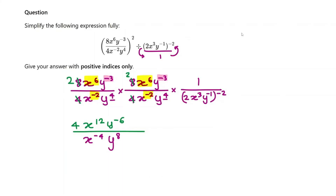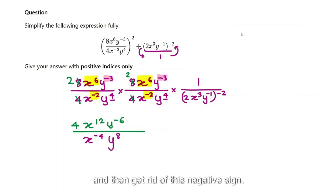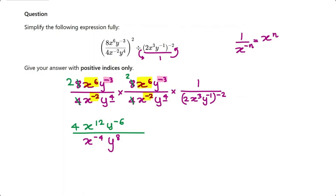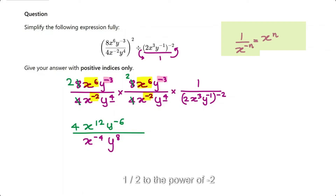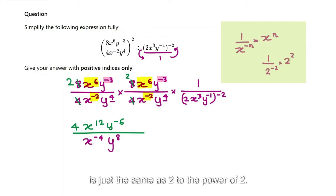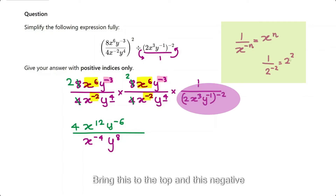Now multiplied by this. I can bring the whole thing to the top and get rid of the negative sign. Here's the theory: 1 over x to the power of negative n is the same as x to the power of n. For example, 1 over 2 to the power of negative 2 is just the same as 2 to the power of 2.